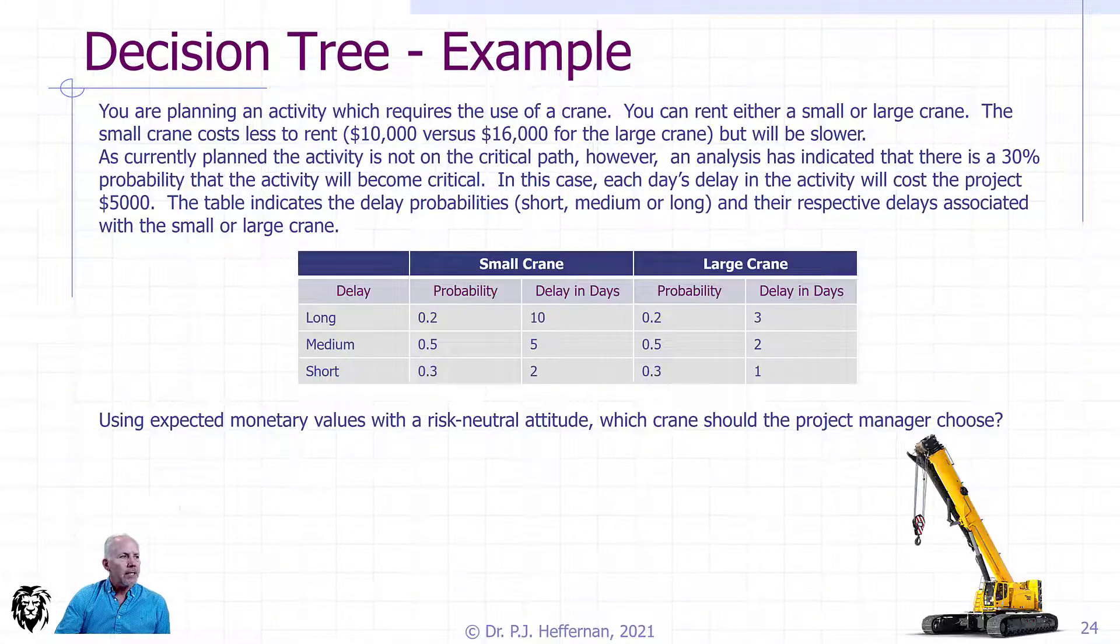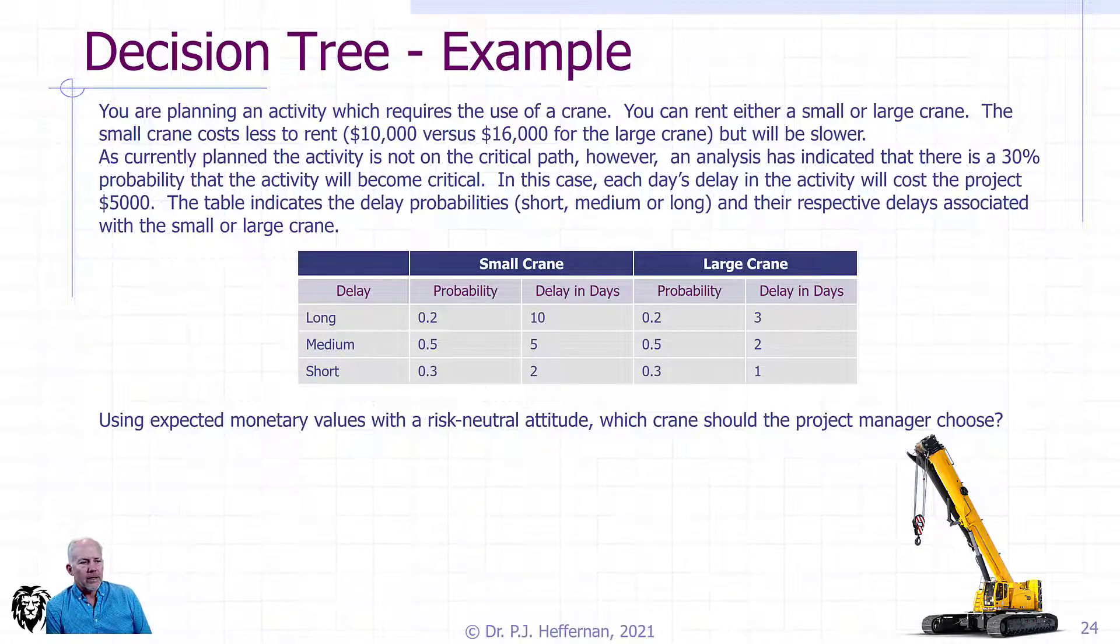Let's see an example. We're planning an activity that requires use of a crane. We have a choice: we can either rent a small crane or a large crane, which is just a technical choice as to how much it can lift. But it's not just that. The small crane costs less, as you would expect, $10,000 instead of $16,000 for the large crane, but it is slower.